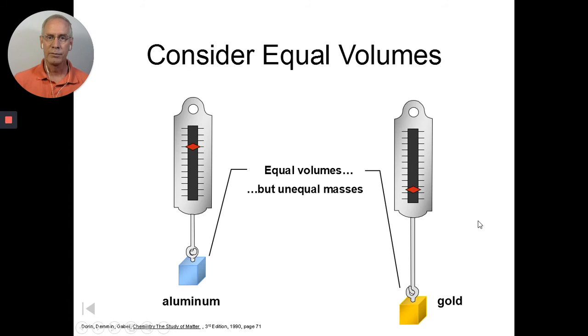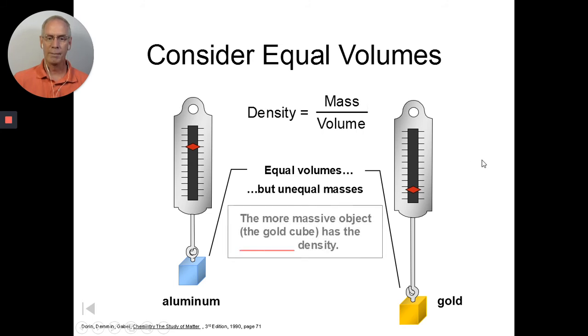Let's finally think about this density in a couple different ways. If we have equal volumes of aluminum and gold, because gold is more dense, it will weigh more than the less dense aluminum. So, equal volumes, if they have an equal volume, the one with the larger density will have the larger mass. Hopefully, that makes some sense to you. The more massive object will have the greater density.